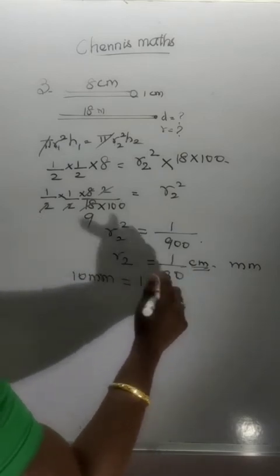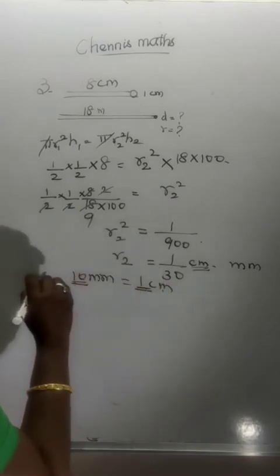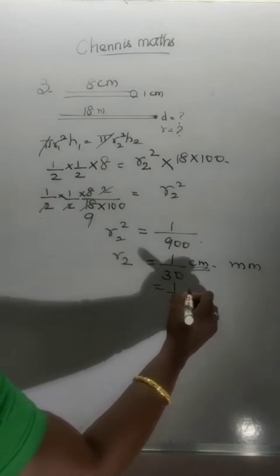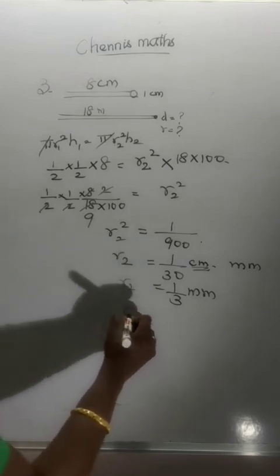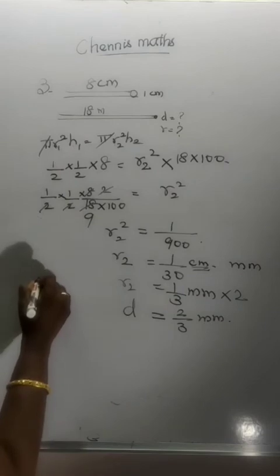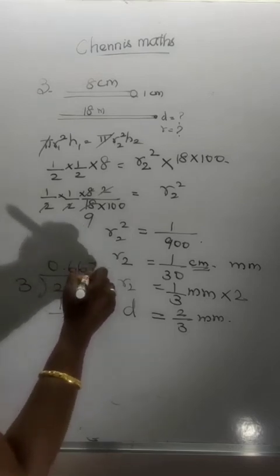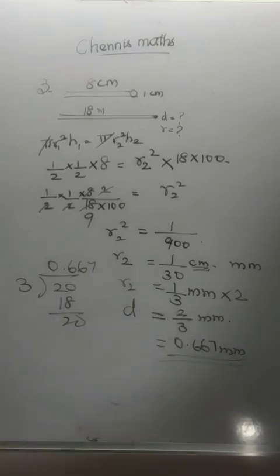Therefore r2 is equal to 1 by 30 centimeters. Since 10 mm equals 1 cm, multiply by 10: r2 equals 10 by 30, which is 1 by 3 mm. The diameter is 2 times r2, giving 2 by 3 mm, approximately 0.667 mm, or about 0.0667 centimeters.